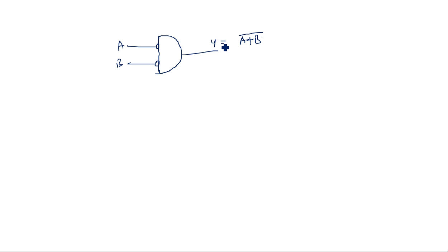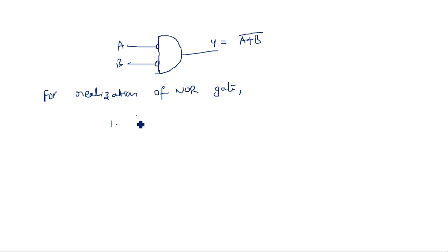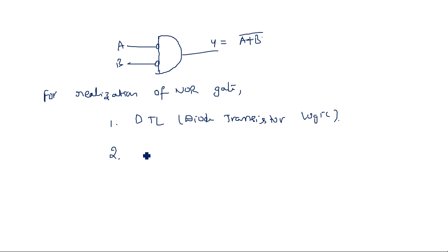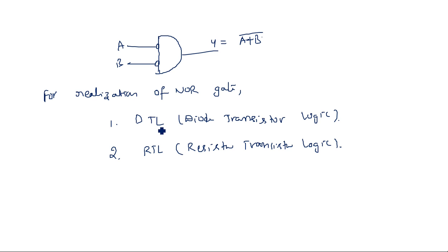Now, if you want to realize this NOR gate, for realization of the NOR gate we use: first one is Diode Transistor Logic (DTL), and the second method is Resistor Transistor Logic (RTL). These are the two types of realization for NOR operation.